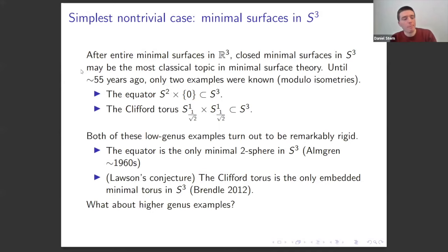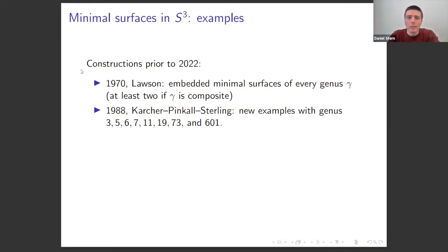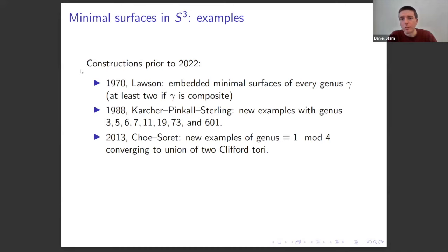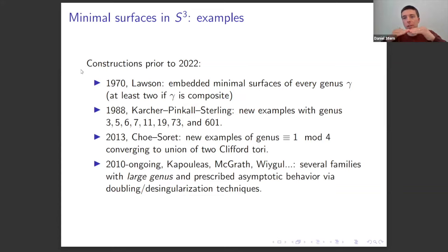What about higher genus examples? Already in 1970, Lawson showed by a nice construction that there are embedded minimal surfaces of any possible genus. Using similar constructions in the late 80s, Karcher-Pinkall-Sterling came up with new families. In 2013, Choe and Soret came up with a few more. Kapouleas and various collaborators, including Peter McGrath and Dave Wiygul, produced many families with large topology via doubling and desingularization techniques.